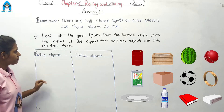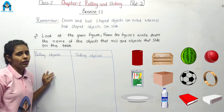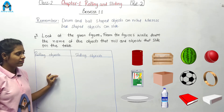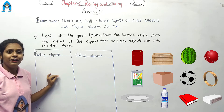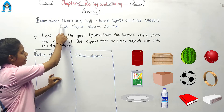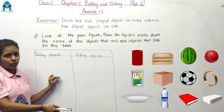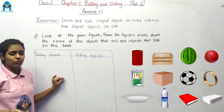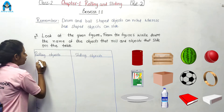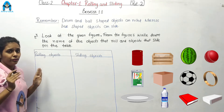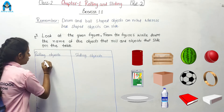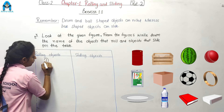Look at the first object. What is this? This is a drum. We know that drum and ball shaped objects can roll. So, drum can roll. We are writing drum on the rolling objects side.